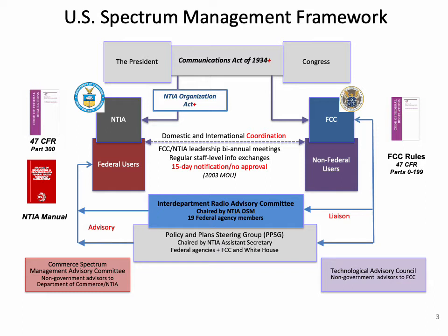In sum, the FCC is responsible for regulating the spectrum resources used by non-federal users, and NTIA oversees the use of spectrum by federal government agencies. NTIA's spectrum management rules are published in the Manual of Regulations and Procedures for Federal Radio Frequency Management, also known as the Red Book. Coordination of national spectrum policy and management issues between the FCC and NTIA occurs at several levels and is generally governed by a memorandum of understanding between the two agencies that was executed in 2003. While the current MOU does not specifically mention the IRAC or other interagency advisory groups, I will address the interagency coordination process later.